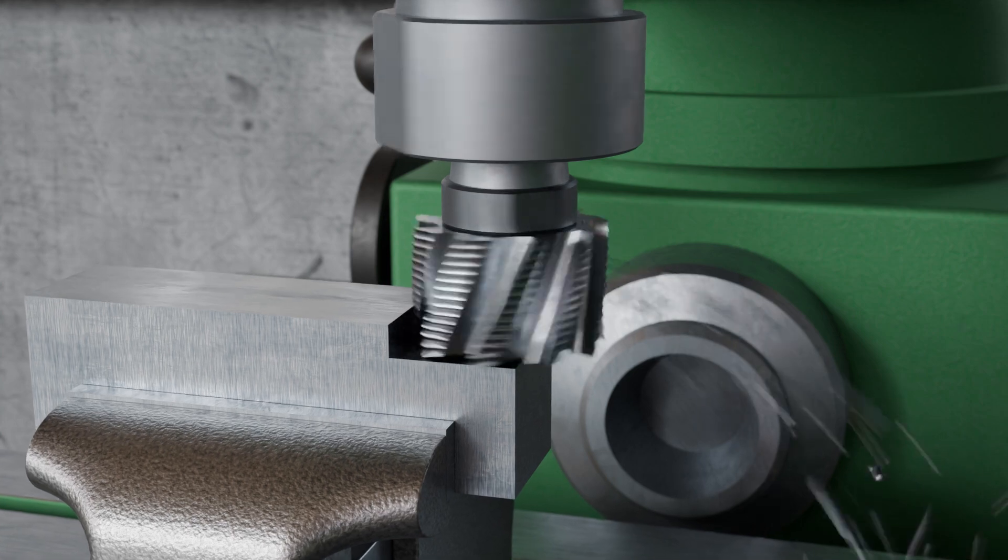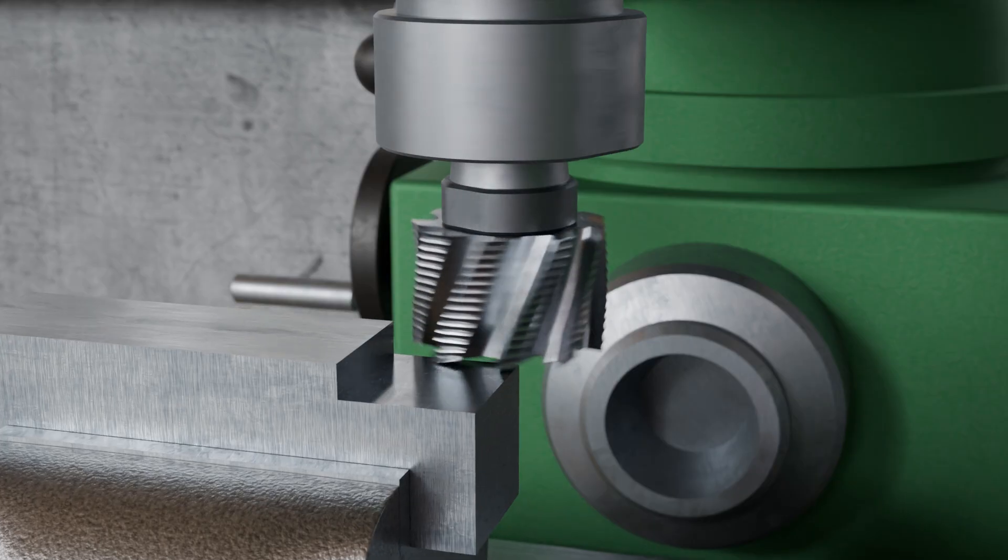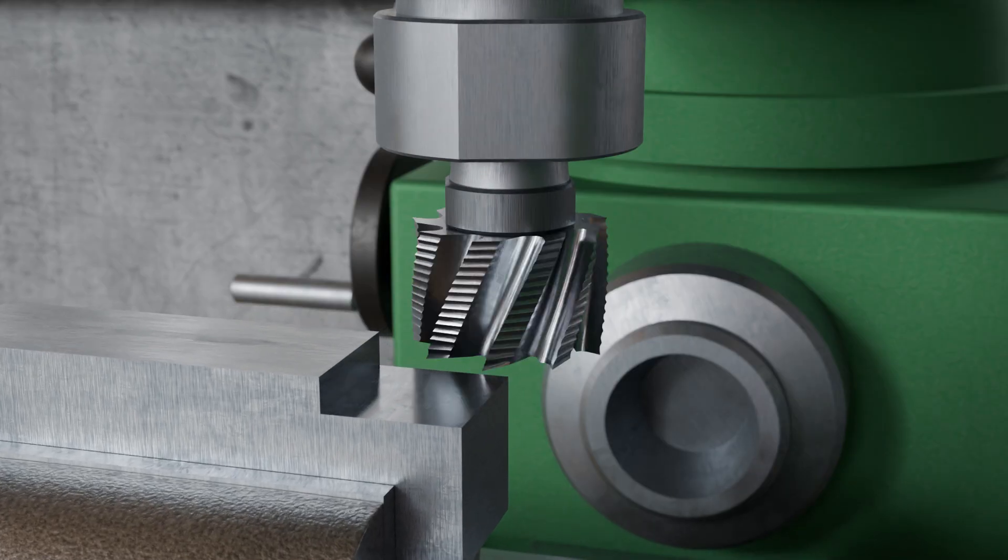Face and peripheral cutters are particularly suitable for producing right-angled steps, as cutting occurs both with the end face and the periphery. Cylindrical face cutters are often made of high-speed steel, but they are also available with indexable carbide inserts.